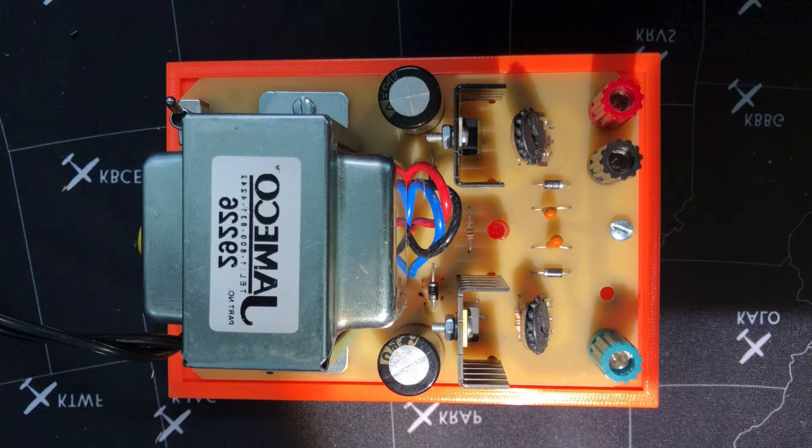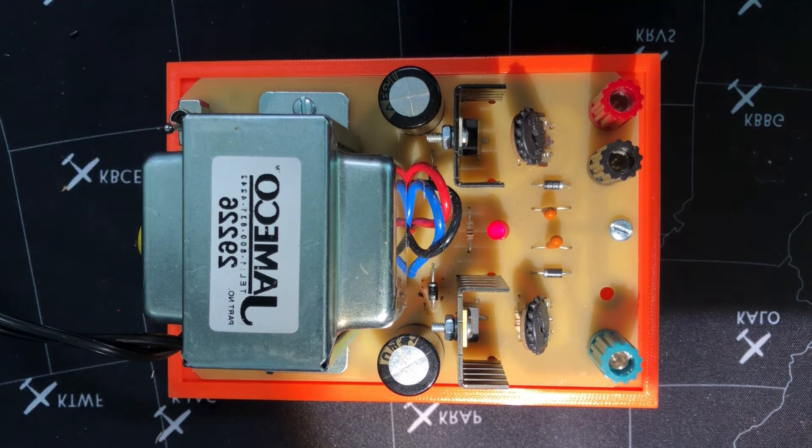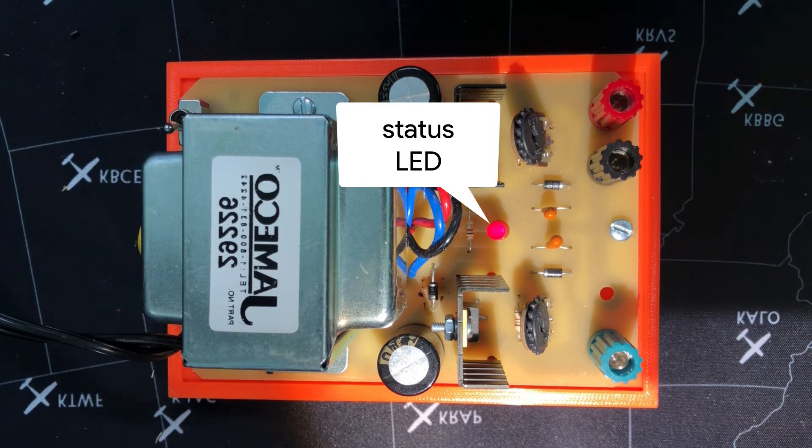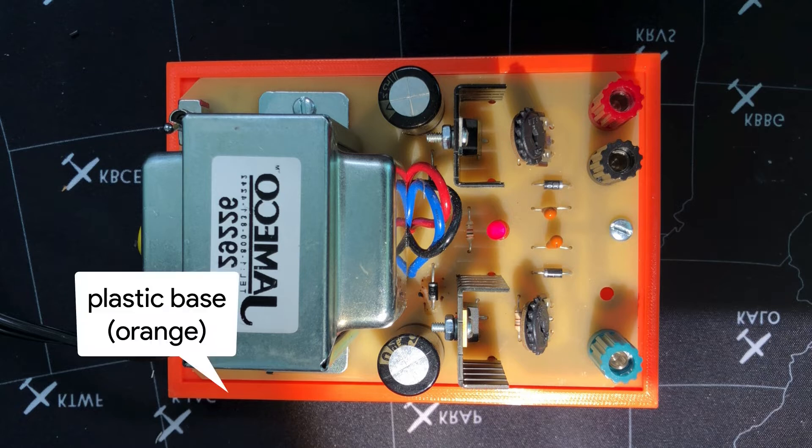After plugging in the supply voltage to the wall outlet, the toggle switch will turn the supply on and off. A status LED lights up when the switch is on. Be sure that the supply is placed on top of the plastic insulating base to keep the solder joints from shorting out.